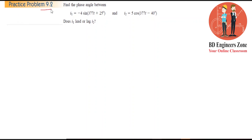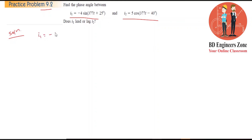This is practice problem 9.2. We need to find i1 and i2, where i1 equals 4 or 5 in the given sinusoidal expressions.